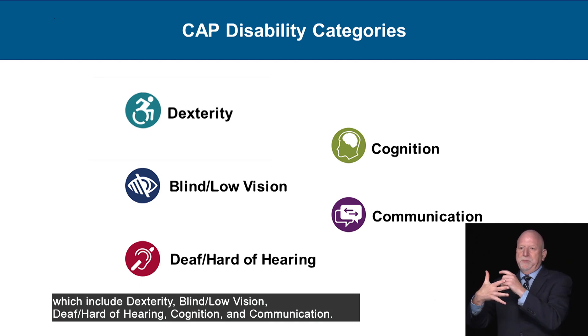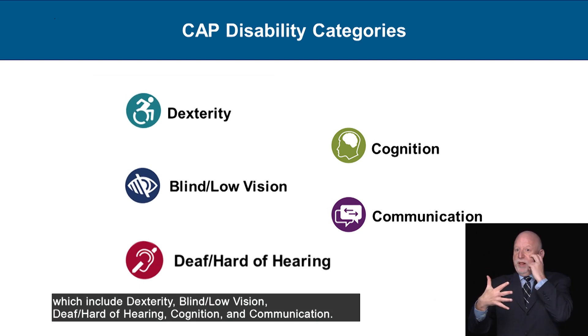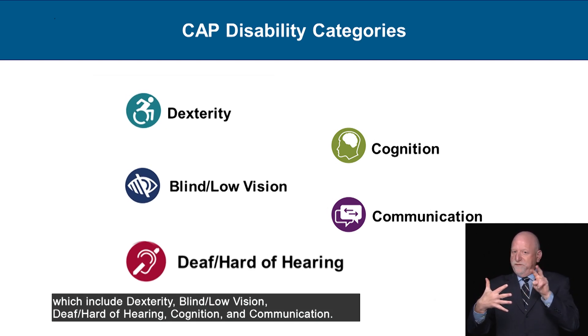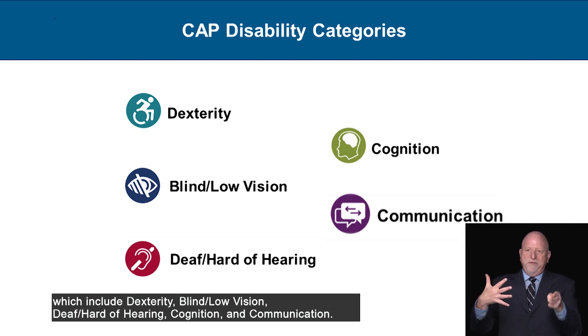The five CAP disability categories include dexterity, blind or low vision, deaf, hard of hearing, cognition, and communication.